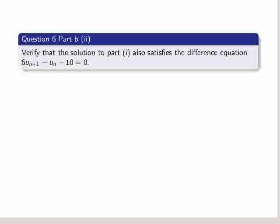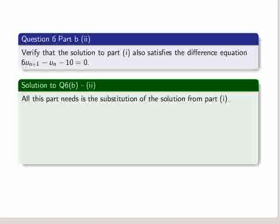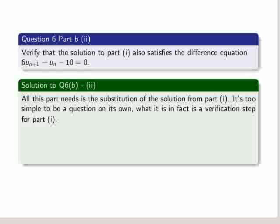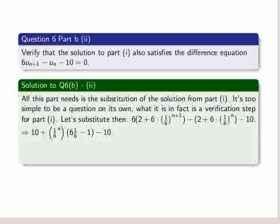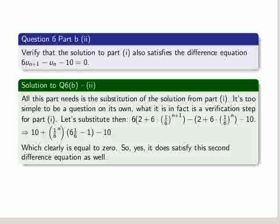Verify that that solution also satisfies 6 times u_n+1 minus u_n minus 10 equal to 0. Okay, all this part needs is a substitution of that formula, of that solution we just got. It's too simple to be a question on its own, really. It's a verification step for part 1. So in this way we can verify that part 1 is correct. So we'll just substitute 2 plus 6 times (1/6) to the power of n+1 times 6. That's our 6 times u_n+1 term. We subtract it from, we subtract it by the u_n term, and then subtract again by 10. So we rearrange those values. We get a 12 coming out. We take 2 from that and then we isolate (1/6) to the power of n. And we actually see those should be fairly clear if you do those on paper that it equates to 0. So the second difference equation is satisfied.